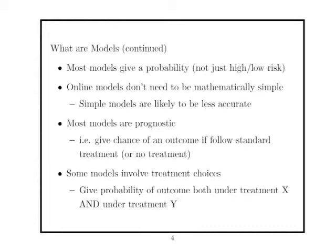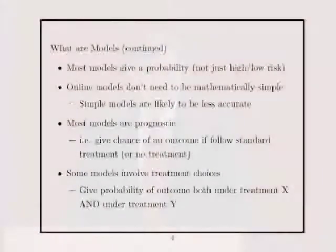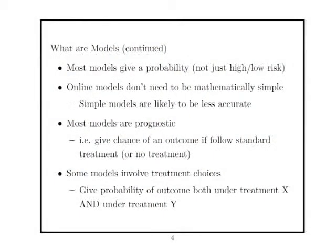These models don't necessarily tell you what to do — they just give you a probability or put you in a category. That's supposed to be the aid to decision-making: summarizing information in terms of a probability. And they don't need to be mathematically simple. If it's on a website, you don't necessarily know what's going on behind it. Some are simple and some aren't, and simple ones aren't necessarily the best.